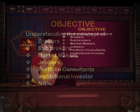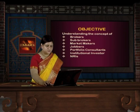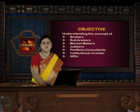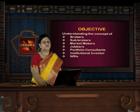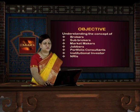Our objective is to understand the concepts of functionaries of the stock exchange. These functionaries or mediums can be brokers, sub-brokers, market makers, jobbers, portfolio consultants, institutional investors, and NRIs. We will learn their conceptual framework — who brokers can be, their eligibility criteria, how they get registration, what fees they need to pay, and what their primary functions are. Similarly, we will discuss these parameters for sub-brokers, and also learn about jobbers and portfolio consultants.